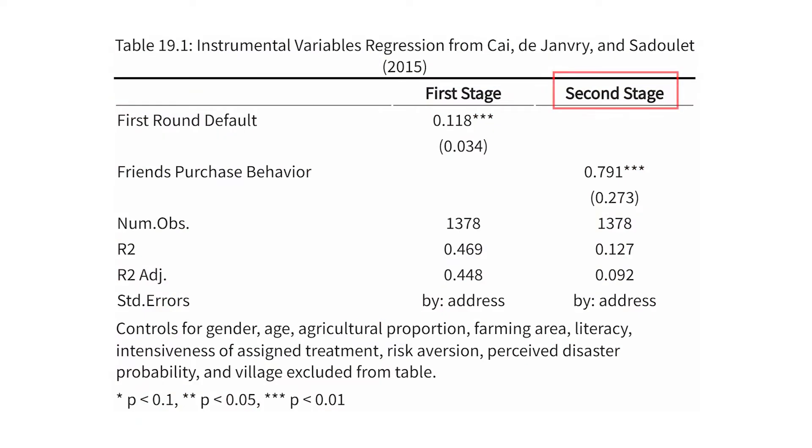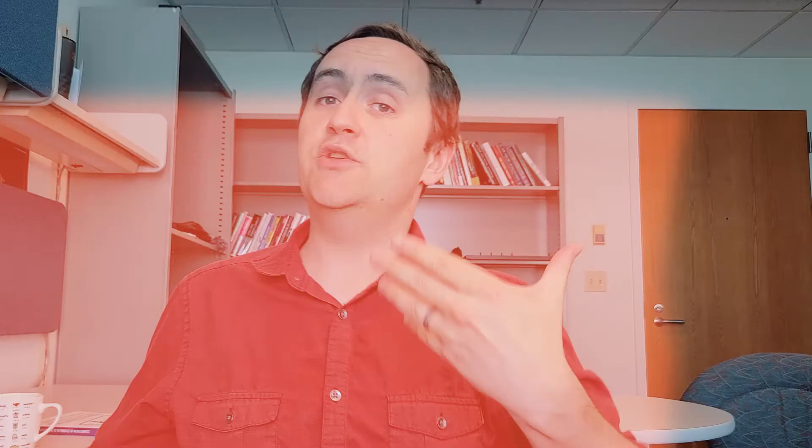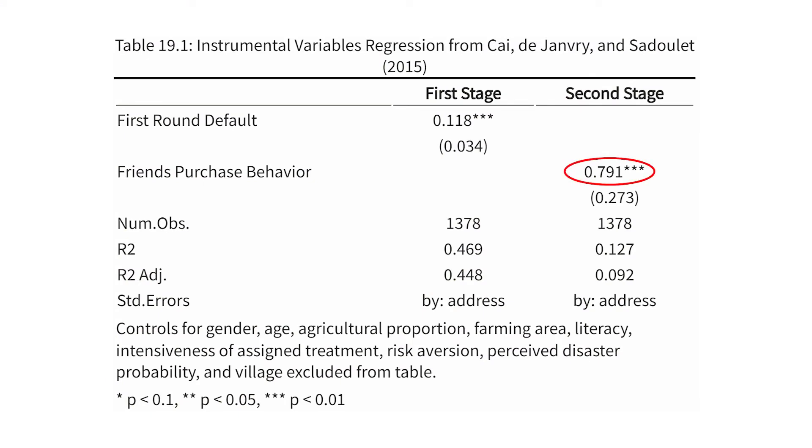So the instrument was relevant — random assignment to that setting did meaningfully increase insurance take-up. In the second stage, we take the predicted part of the neighbor's insurance-buying behavior based on random assignment, and use that to predict our own likelihood of buying insurance. The result: if my neighbor buys insurance, it makes me 79.1 percentage points more likely to buy insurance as well — a very strong network effect. Randomly nudging one person into buying insurance has large carryover potential for their social network.